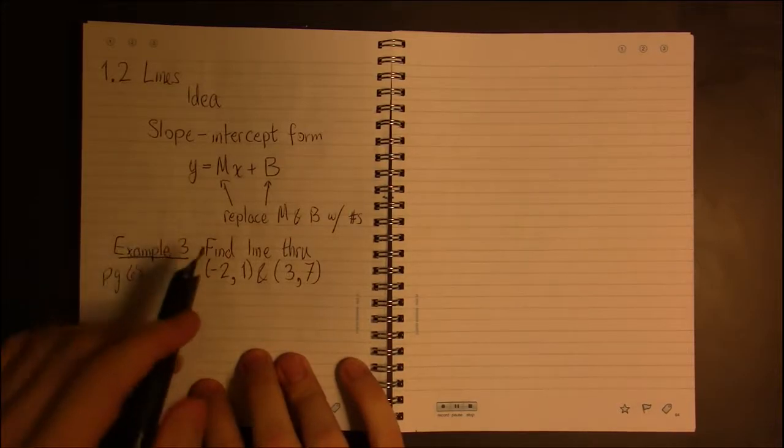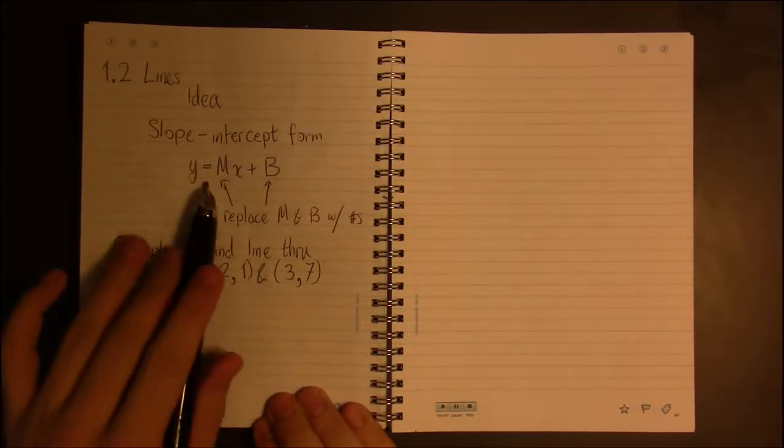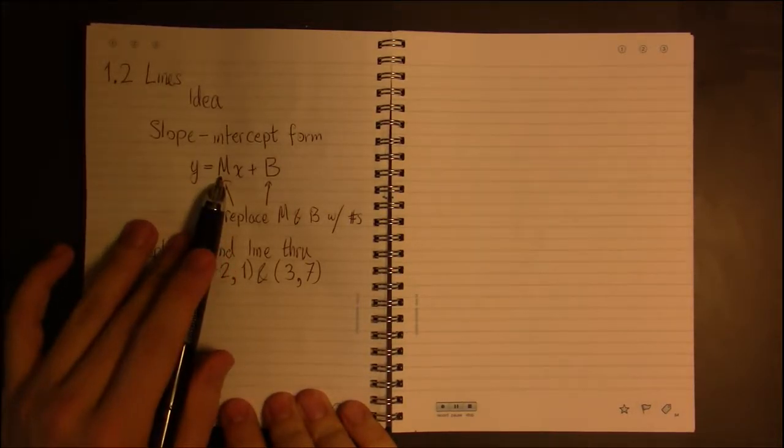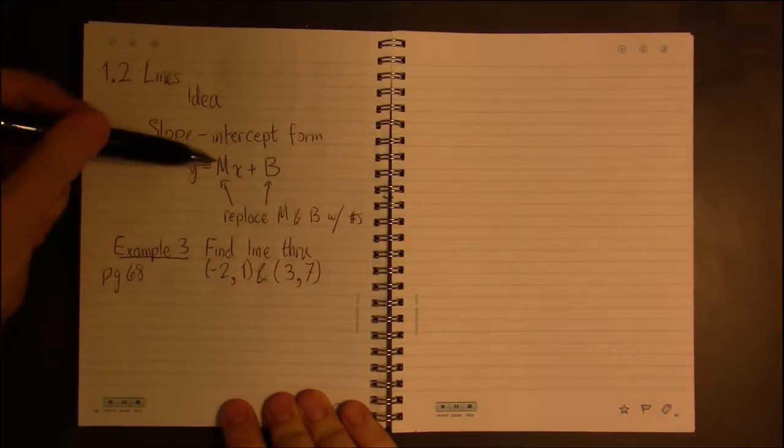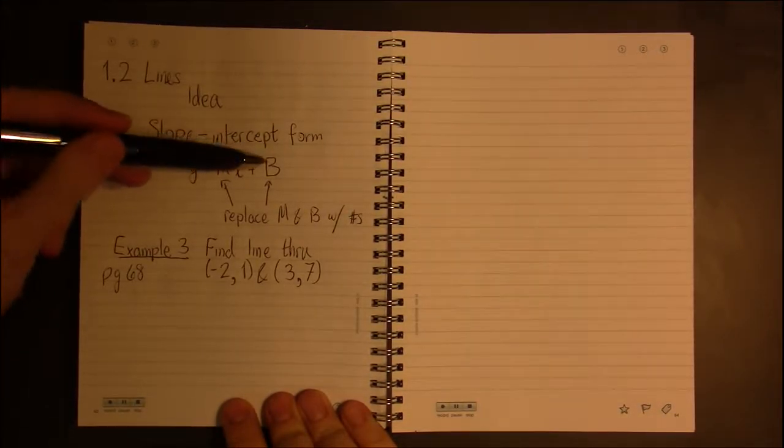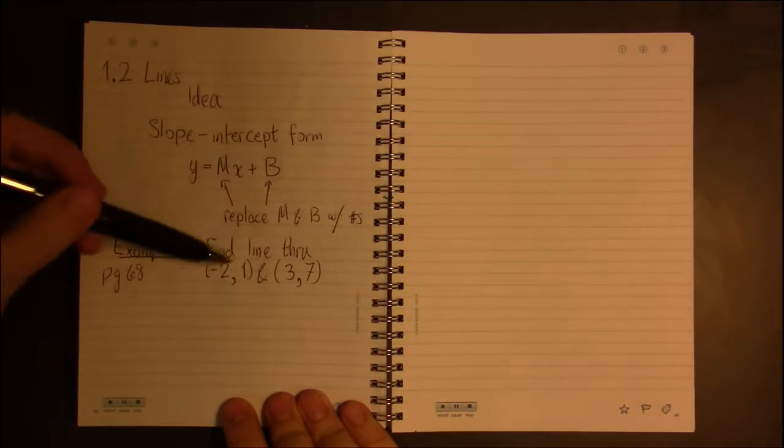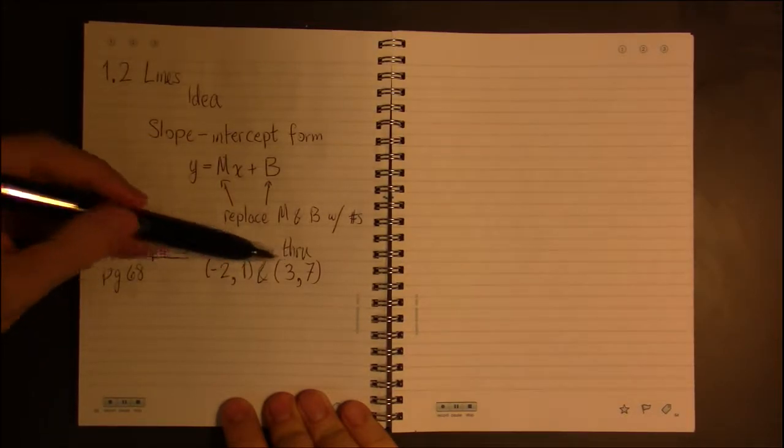Well, the first thing you do when you're given two points and you're trying to find a line is you start off with the slope, because our answer should look like this, except m and b are going to be replaced by actual numbers, y and x will be variables. So, in other words, we have to find m and b for this particular pair of points.